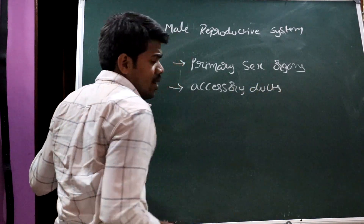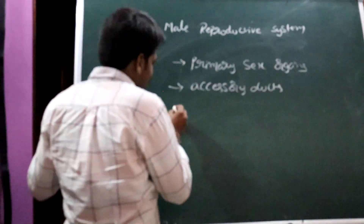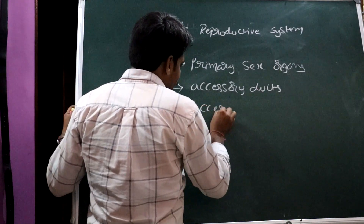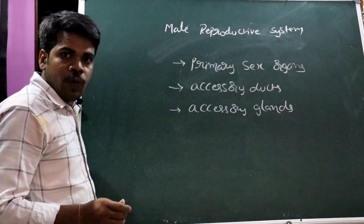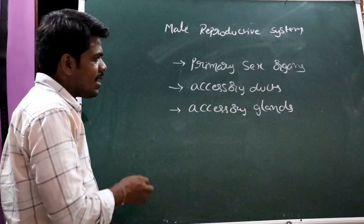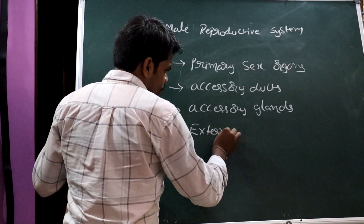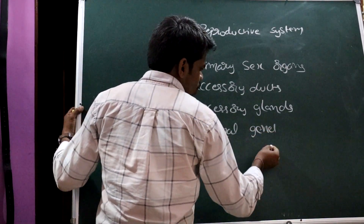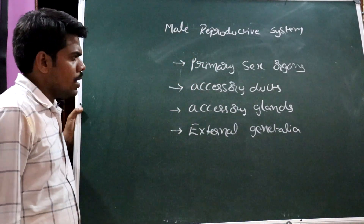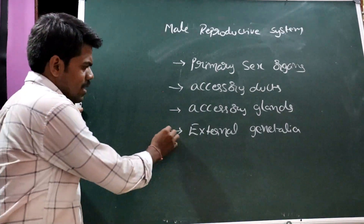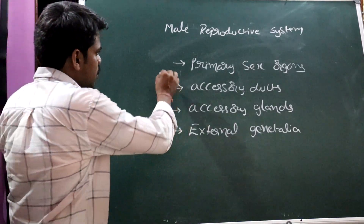Accessory ducts include the epididymis, vas deferens, and urethra. Accessory glands include seminal vesicles, prostate gland, and bulbourethral glands. External genitalia help to inseminate — that is, to send the sperm cells into the female reproductive tract. These are the parts of the male reproductive system.